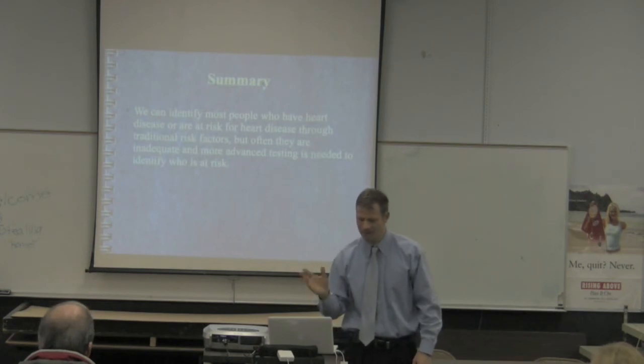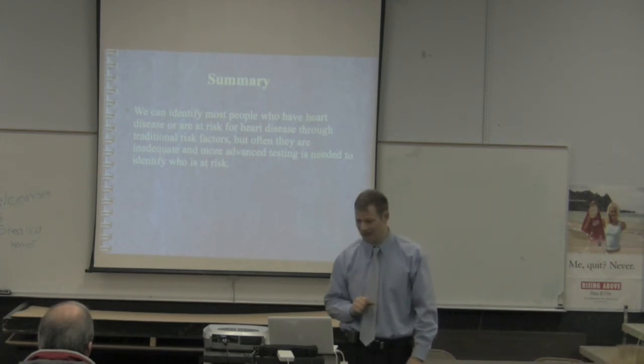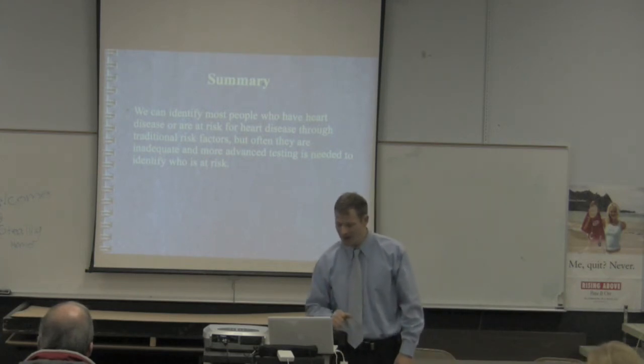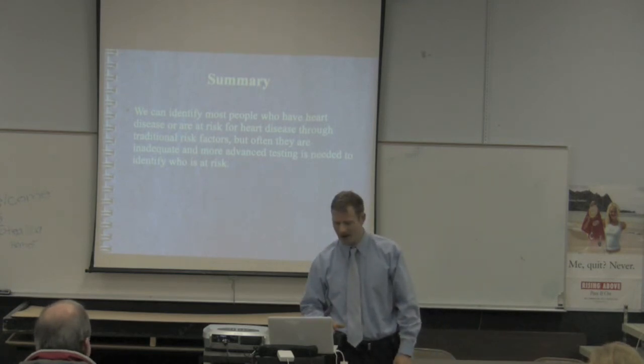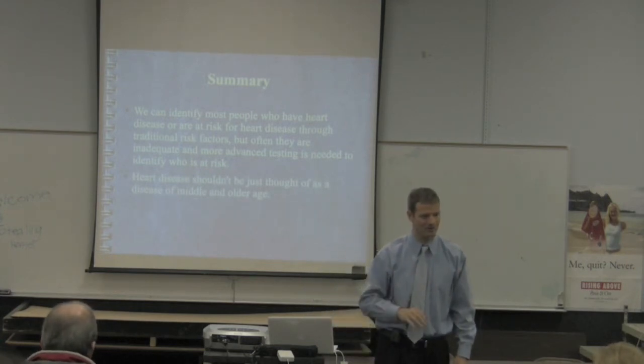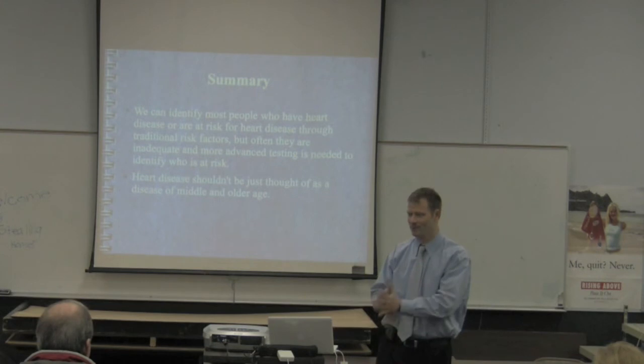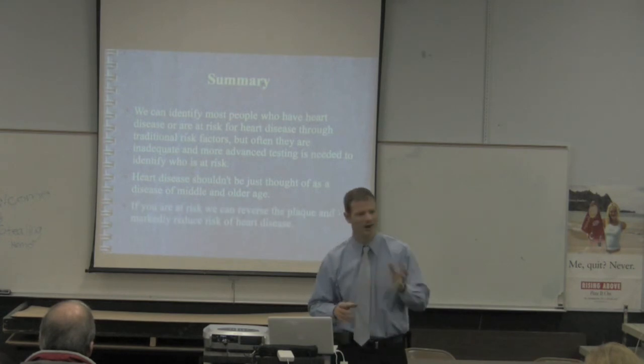In summary, we can identify most people who have heart disease or are at risk for heart disease through traditional risk factors, where we can identify many of them, but often they are inadequate, more advanced testing to help identify those who are at risk. Heart disease shouldn't be just thought of as a disease of middle and older age because we know that started. First, a patient of mine who had a stroke at age 55, had that probably going on starting even in childhood, and it's slowly built up over years.